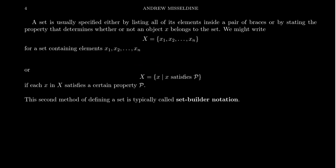Sets are often denoted using curly braces. There are two common ways to describe a set. One way is to list all the elements: you start with a brace, then list x₁, x₂, x₃, x₄ up to xₙ for some number n, then close the brace. Because I don't necessarily want to list all elements — especially when I don't know how big n is — we use ellipses to denote that there's a pattern established. One should always be cautious with ellipses because they depend on a pattern being clear to the audience.